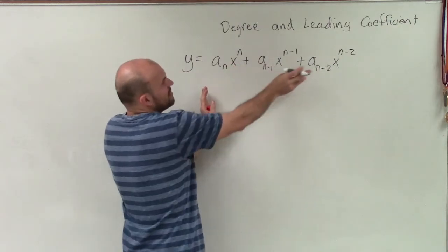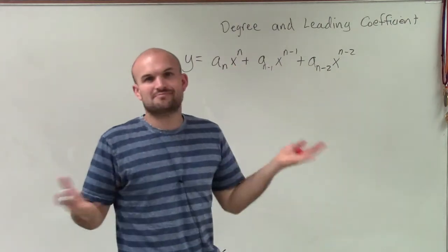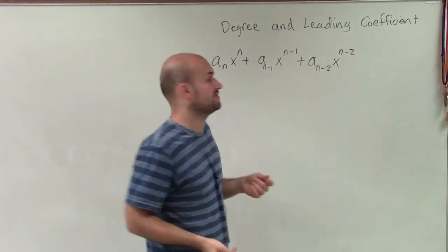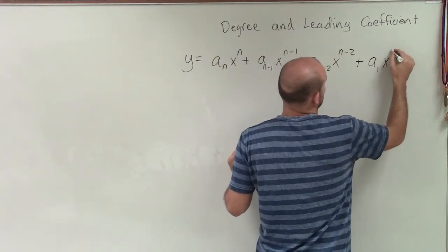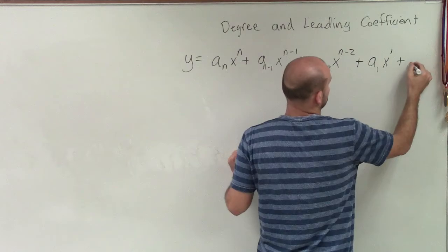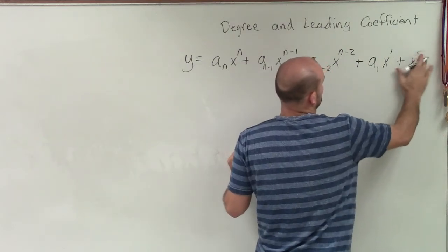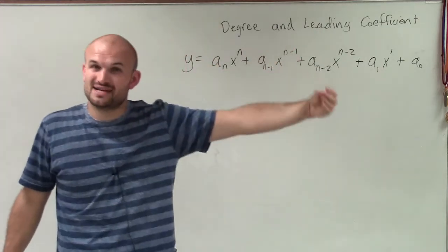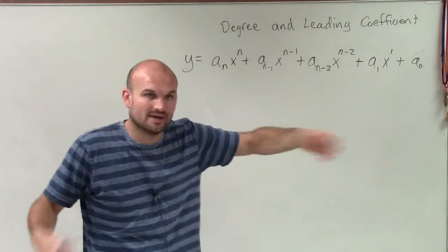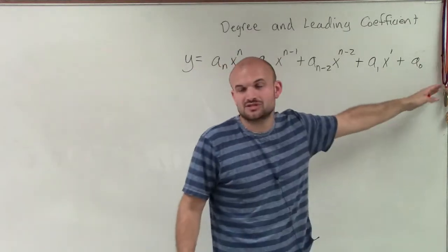These a sub n, a sub n minus 1, a sub n minus 2 really can just be any of your leading coefficients. And then plus we end with a sub 1 x to the first, and then plus a sub 0. OK. Where a sub 0 would be x to the 0, but x raised to the 0 power is going to be 1. So therefore, we're just left with a sub 0, which is our constant.